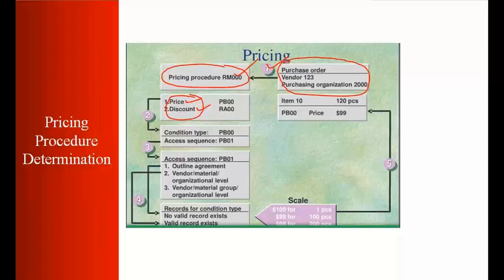So suppose if it's reading the first condition, say price. So first condition will have the condition type PB00, you can see this is PB00 and this is PB00 here. They have a thing called access sequence assigned. What access sequence is? Access sequence will tell the system where system should look for the price. So access sequence PB01 is saying that first look at outline agreement. Try to find the price at outline agreement that we have. If you can't find it there, then look at this PIR record at this level. If you cannot find it here, then look at this level or there can be some more levels.